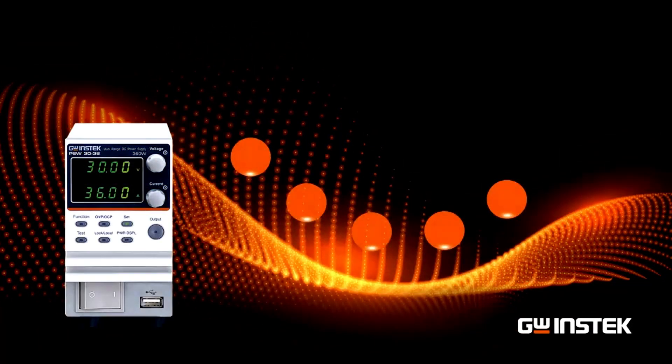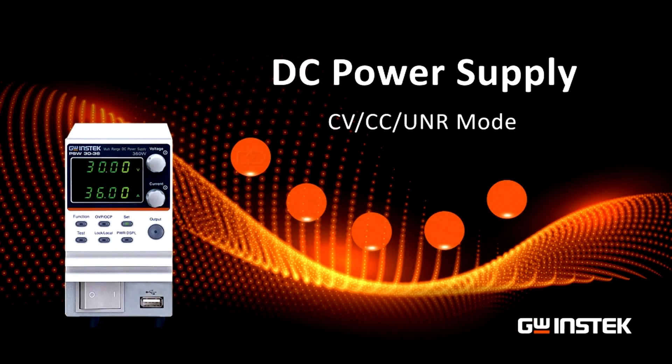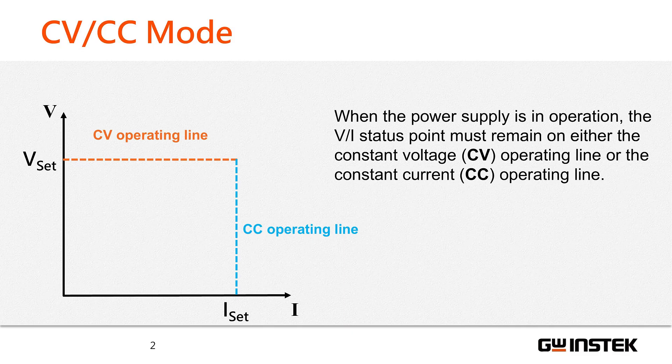Hi everyone, in this video we will be discussing the output modes of DC power supply including CV mode, CC mode, and UNR mode. When the power supply is operating, it will always remain on either constant voltage mode or constant current mode.